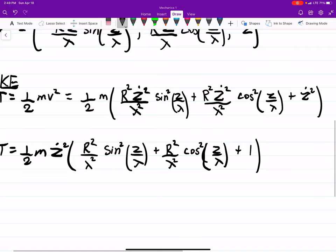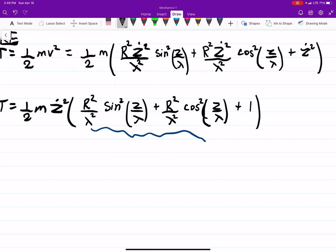In these terms, I can see I can factor out an R squared over lambda squared, and I'll get a Pythagorean identity. So I'm going to do that.